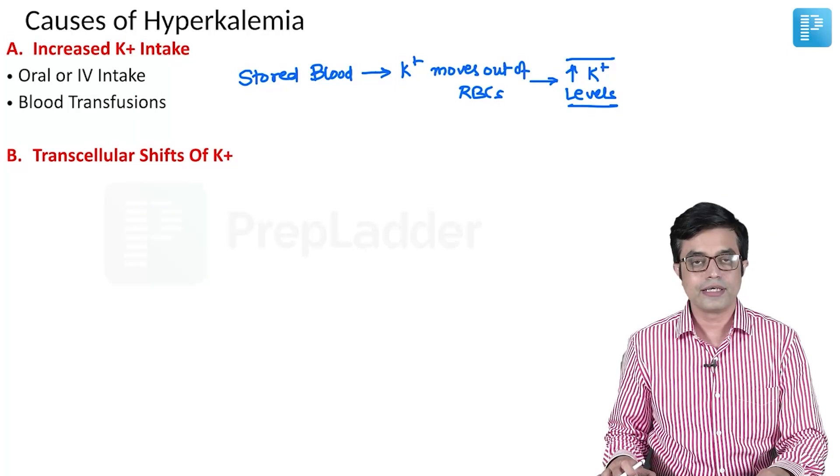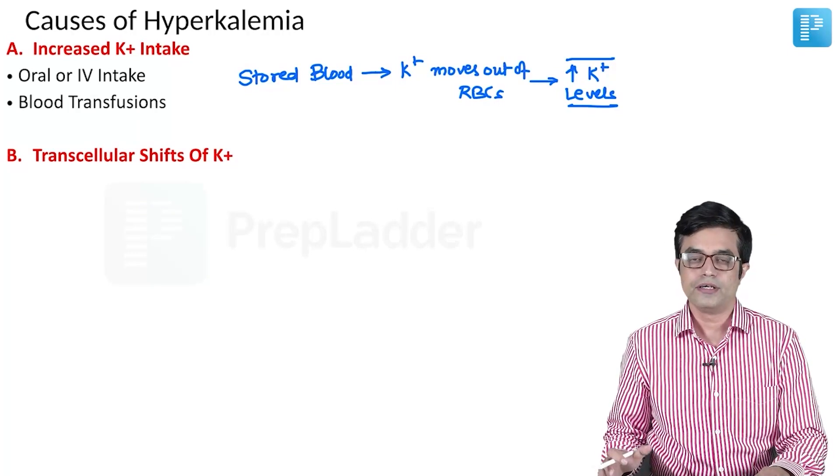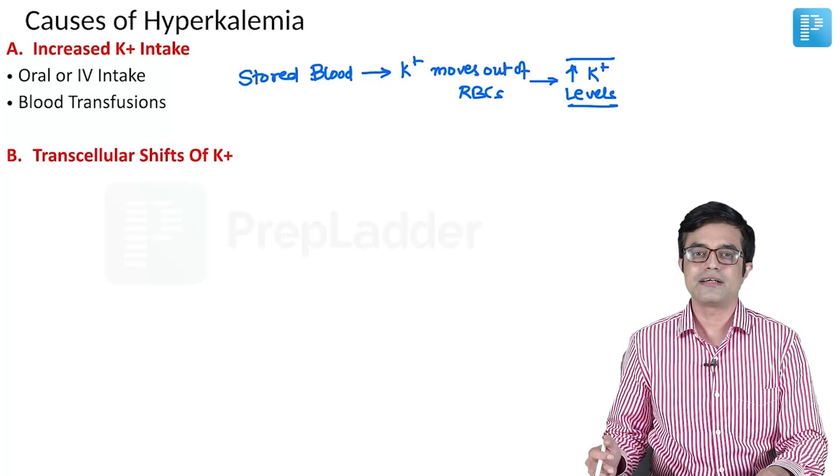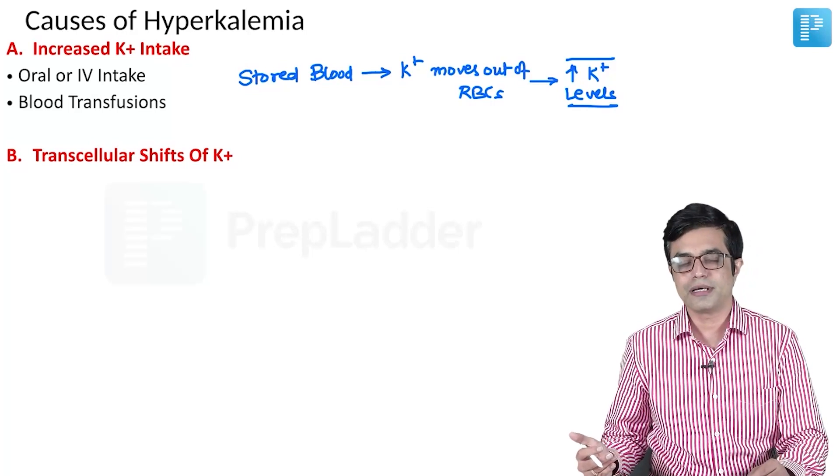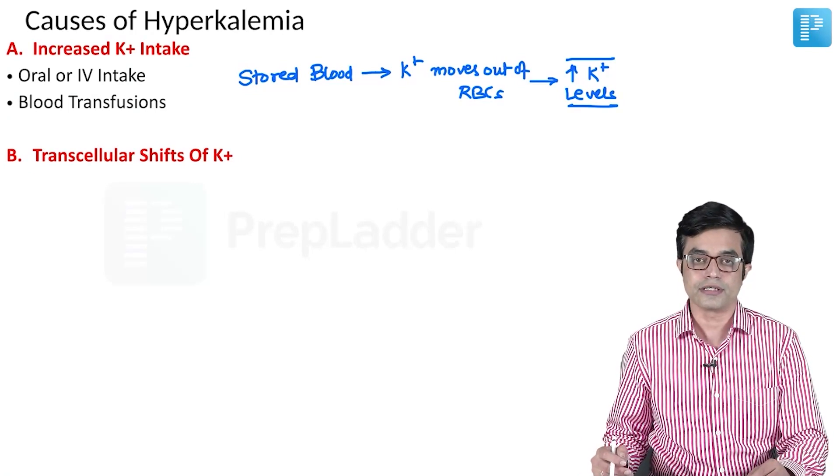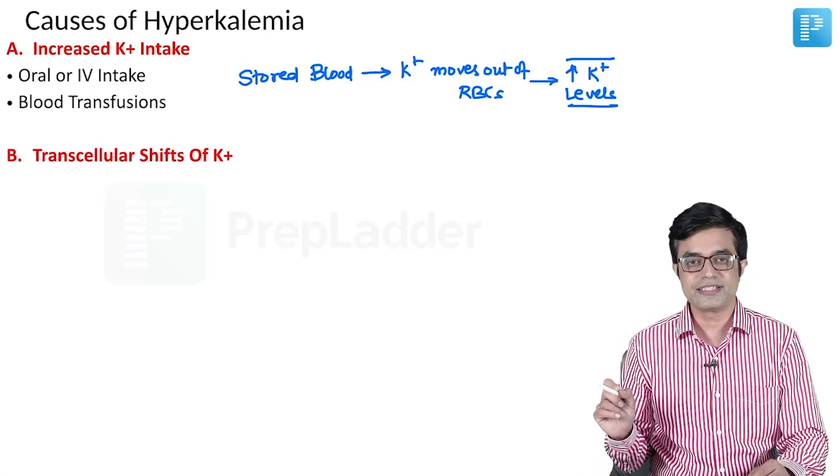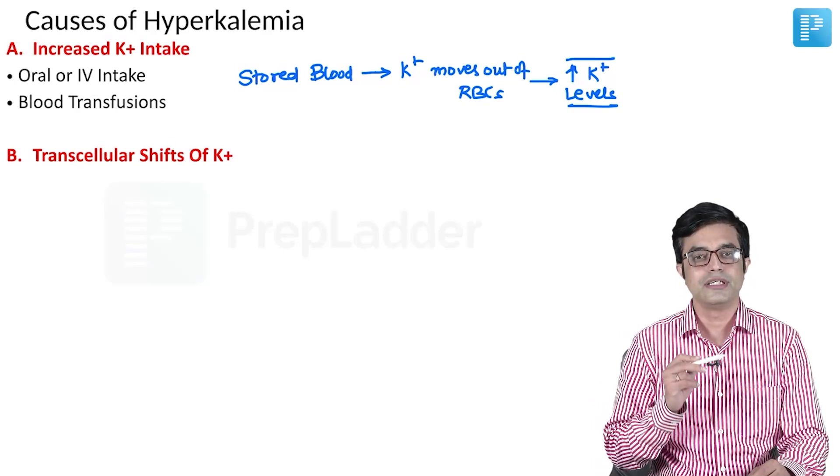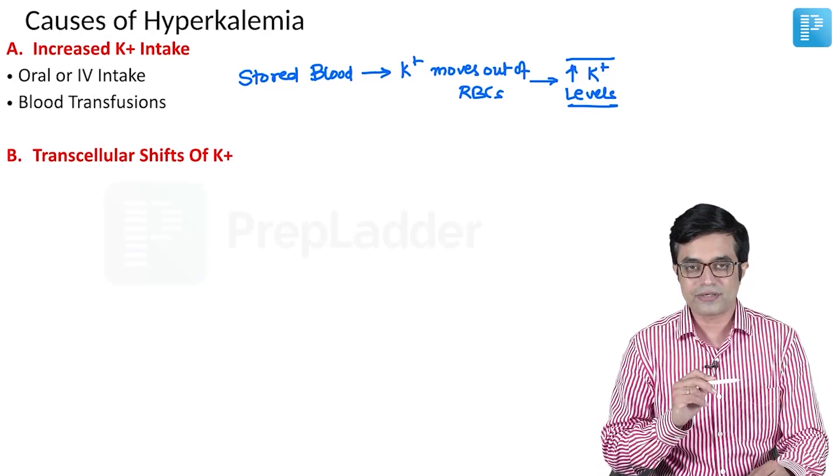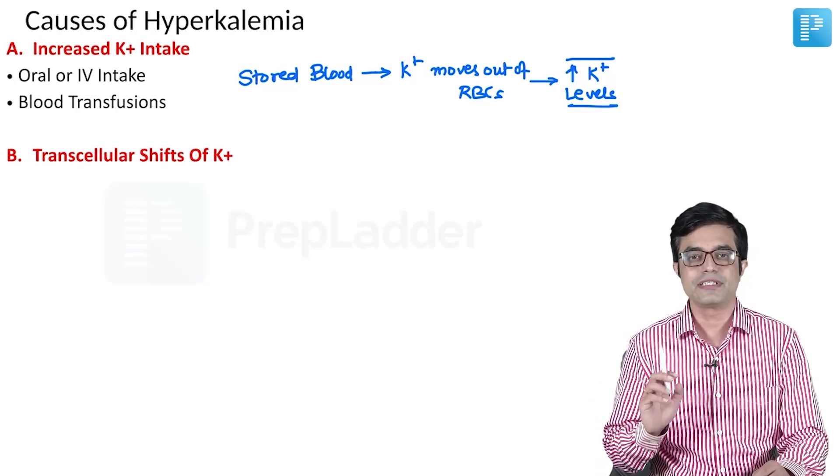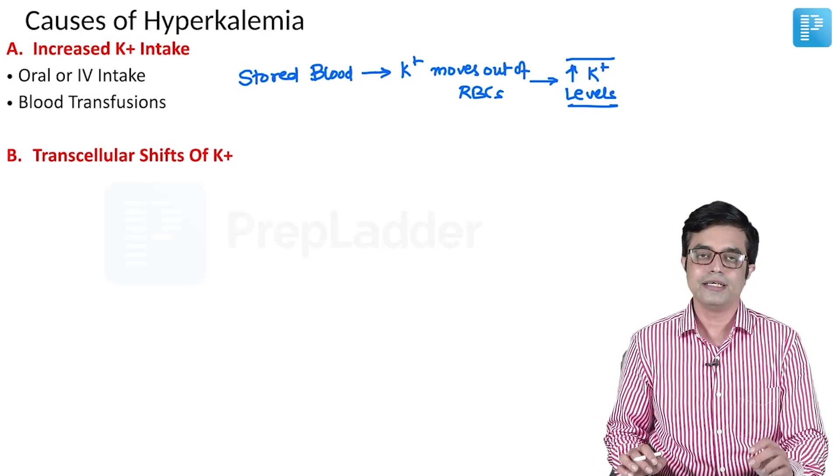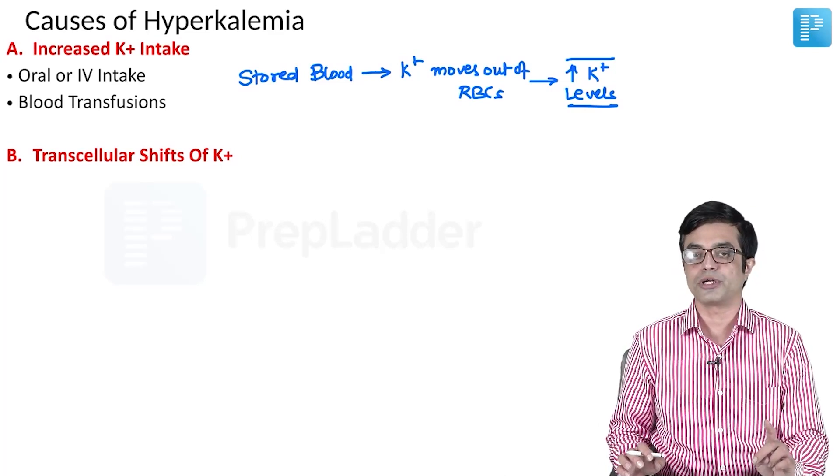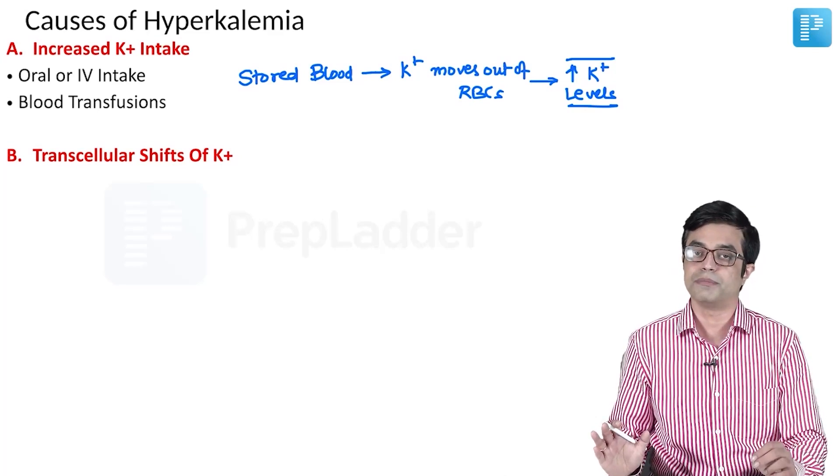The second category are the transcellular shifts of potassium. You know that potassium is an intracellular ion. In certain situations, certain acid-base imbalances as well as use of certain drugs, this potassium which is inside the cell can move out into the blood. This extracellular potassium will cause manifestations of hyperkalemia even if the total body potassium may remain normal.